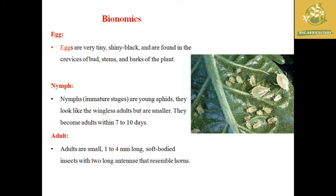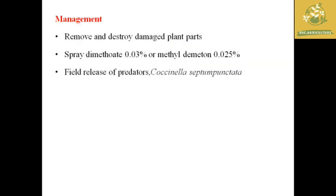Regarding the bionomics of green peach aphid, the egg is very tiny and shiny black, found in the crevices of buds, stem, and bark of the plant. The nymph is an immature stage with a period of around 7 to 10 days and is wingless but smaller compared to the adult. The adult is small, growing up to 1 to 4 mm in length, with two antennae resembling horns, and they are known as soft-bodied insects.